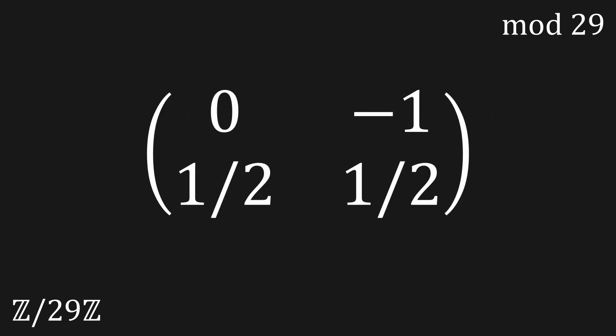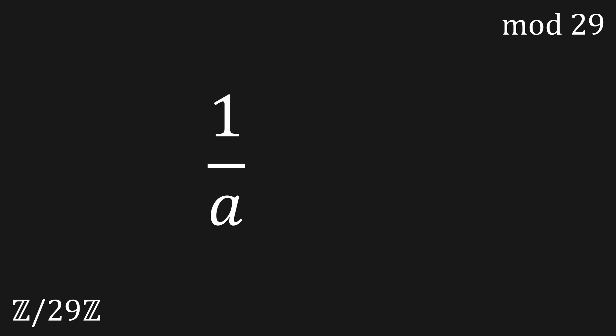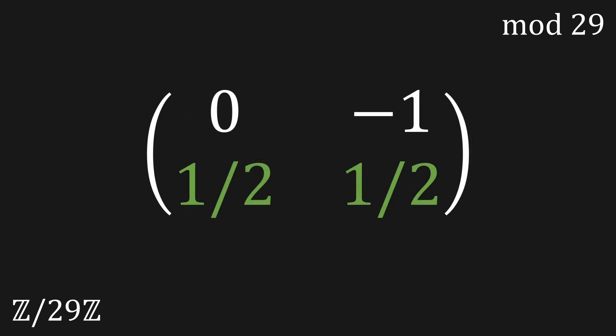Now you can apply the modular operation for each element in the matrix. But what happens with the fractions in the second row? Because these fractions are not integers and we operate in modulo 29. Remember that you can rewrite the fraction 1 divided by a to a to the minus 1 for a not equal to 0. Similarly you can rewrite b divided by a to b times a to the minus 1. a to the minus 1 can be interpreted as the multiplicative inverse of the integer a modulo n. If we rewrite the elements in our inverse matrix with that knowledge we get this matrix.